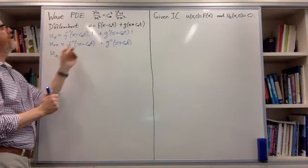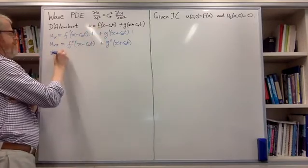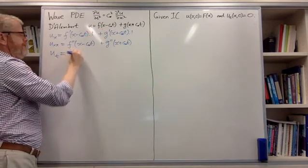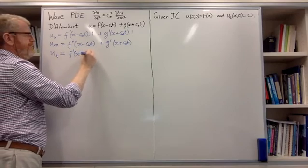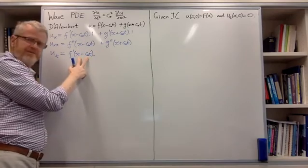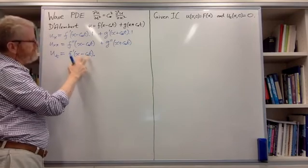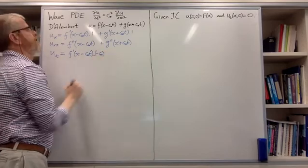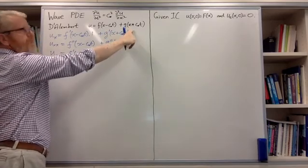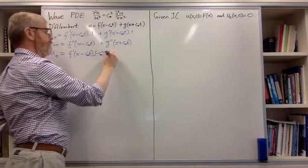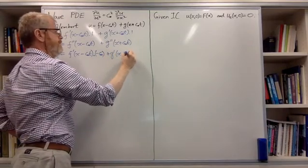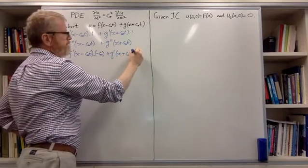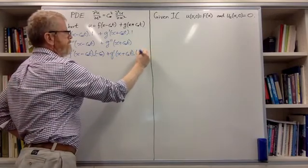Now for the time derivatives. du/dt is very similar. The derivative of f gives f-dashed of x minus c-star t times the derivative of the argument with respect to t, which is minus c-star. Then plus g-dashed of x plus c-star t times the derivative of its argument with respect to t, which is plus c-star.